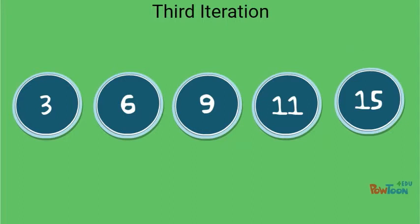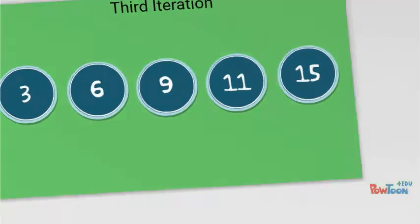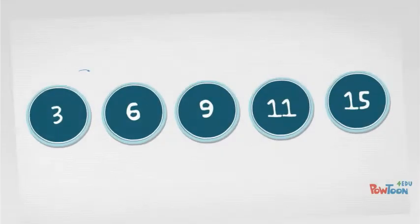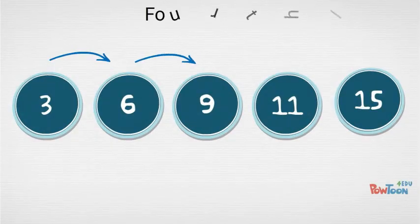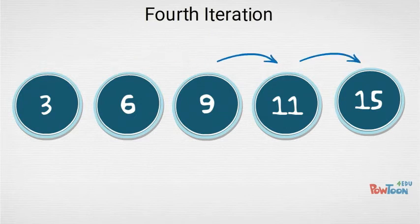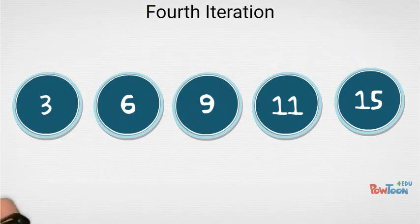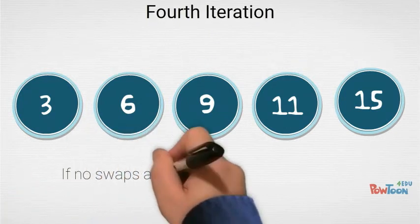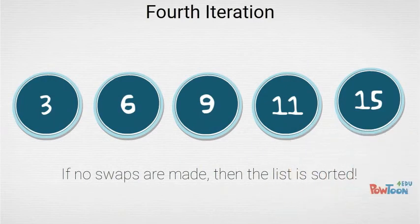And once again, because we made swaps during the previous iteration, we need to loop through the list again and examine it for additional swaps. On the fourth iteration, we discover that each element is less than the next element in the list, and no swaps take place, which indicates that we finally have a sorted list.